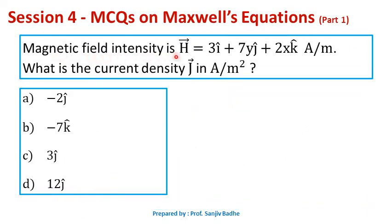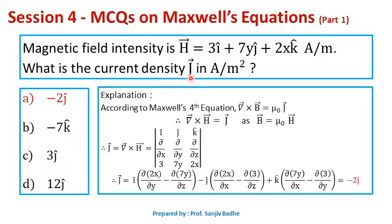Next one: magnetic field intensity is given as H bar equals 3 i-cap plus 7y j-cap plus 2x k-cap ampere per meter. What is the current density J bar in ampere per meter square? The options are: minus 2 j-cap, minus 7 k-cap, 3 j-cap, or 12 j-cap. The current density J bar can be found using Maxwell's fourth equation, which gives curl of H bar equals J bar. So we need to find curl of H bar.